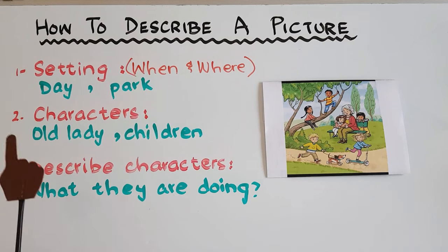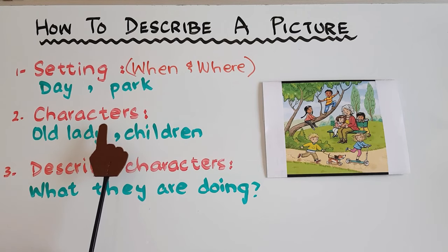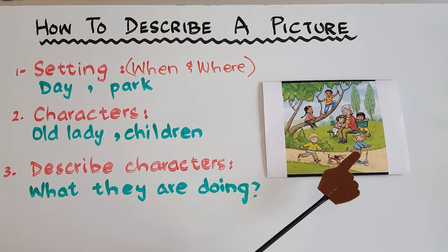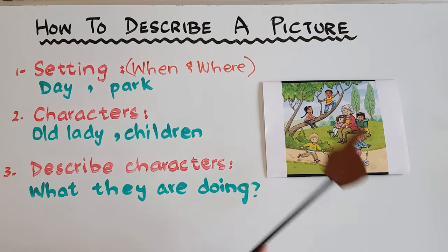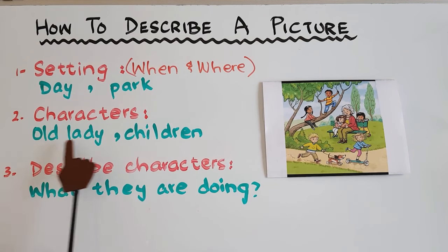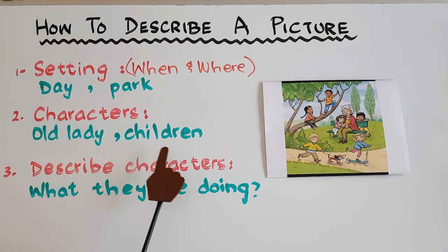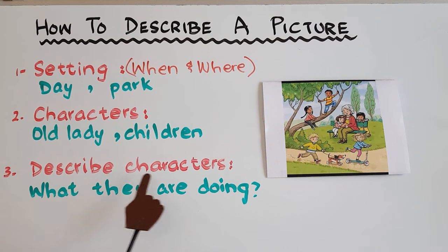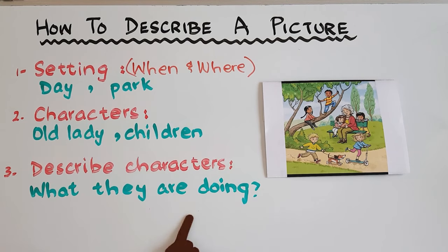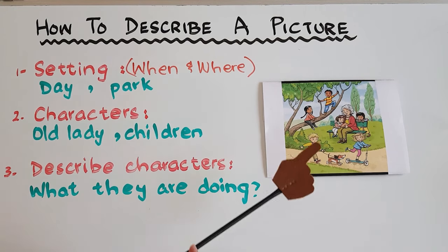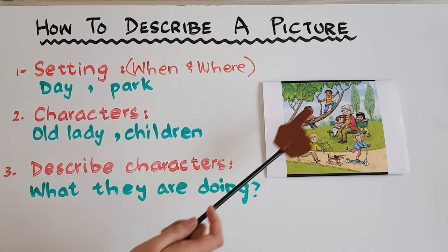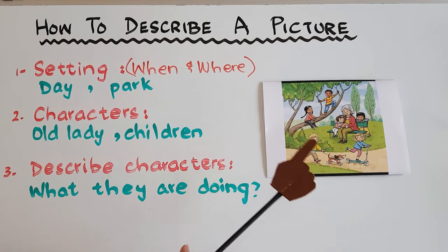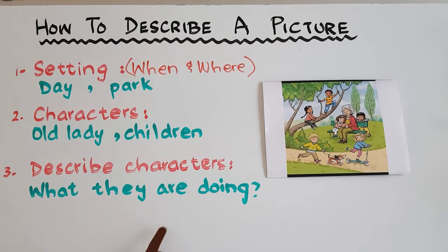Then, what are the characters that you can see in this picture? Here is an old lady and children. So we have an old lady and children. You also have to describe the characters — what they are doing. As you can see, there are different characters doing different things, and when you combine all these it will be a paragraph at the end.